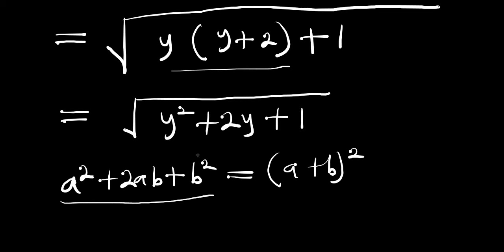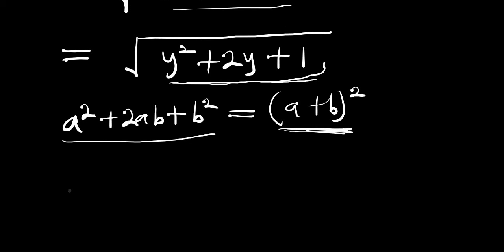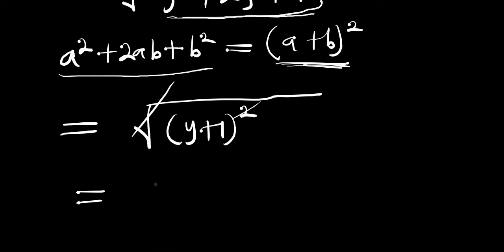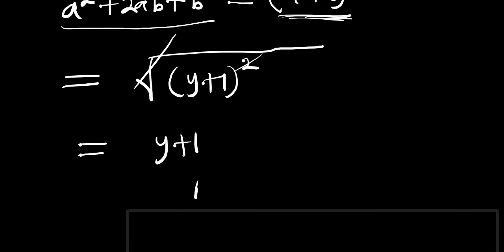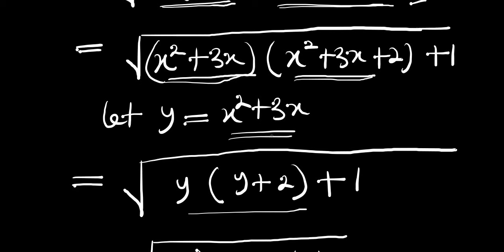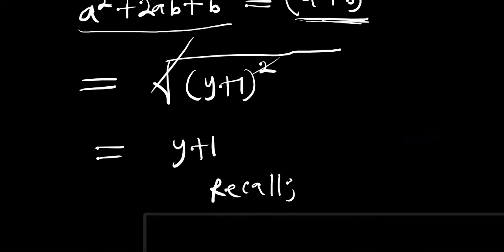What we have inside the square root is in the form of that identity, so we replace it accordingly. That means we have the square root of y plus 1 squared, and the square root cancels the square, leaving simply y plus 1. Recall that y equals x squared plus 3x.